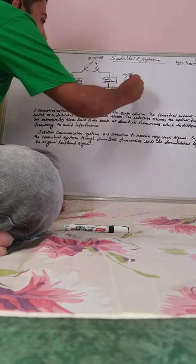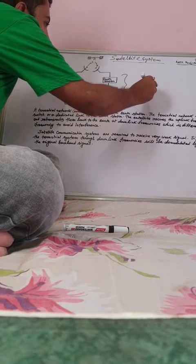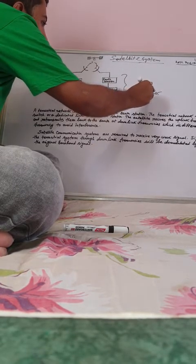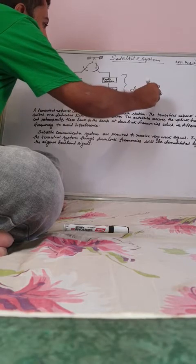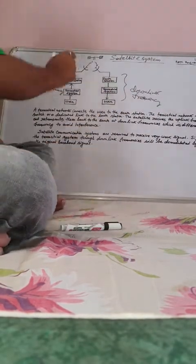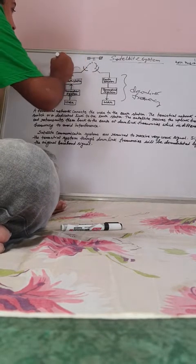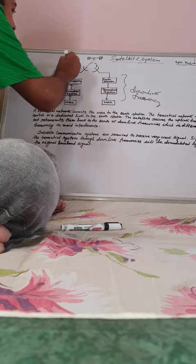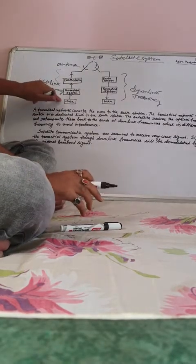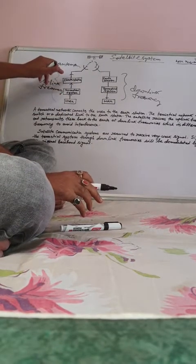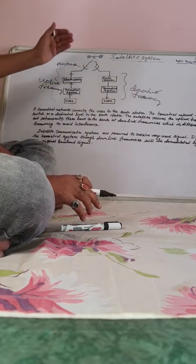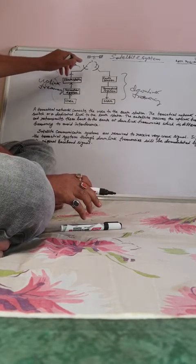This part is called the down layer. First, let's consider this part — this is your antenna. This part consists of a user, a terrestrial system, and an earth station connected with an antenna. This is your transmitting antenna.